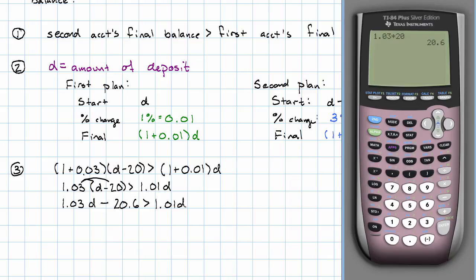Now that both sides of the equation are simplified, I need to get rid of the D term on one side. I'm going to get rid of the D term on the left, because there's no constant on the right. So I'll subtract 1.03 D from both sides.